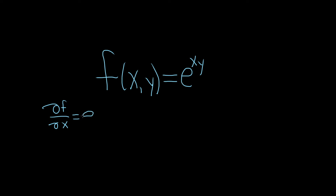We're going to get e to the xy times the derivative of the inside function. The inside function is xy and we're taking the derivative with respect to x. The derivative of x is 1 and then we're just left with the y, which is a constant. So this is equal to y·e^(xy).